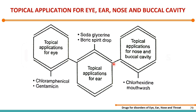We have some topical applications for eye, ear, nose, and buccal cavity. Examples of drugs which will act topically on the eye are chloramphenicol and gentamicin. Both drugs were discussed in detail in chemotherapy of Pharmacology 1, 3rd semester. We are also going to talk about topical agents: soda glycerin and boric spirit drops for the ear.